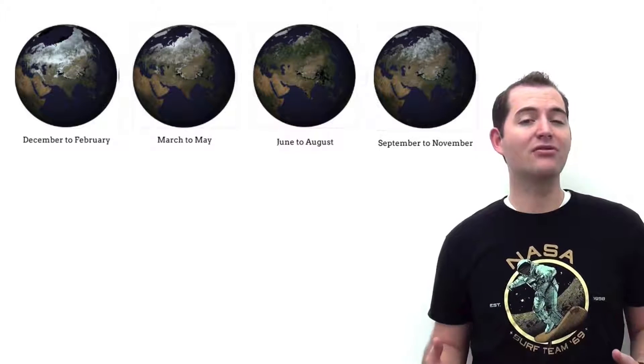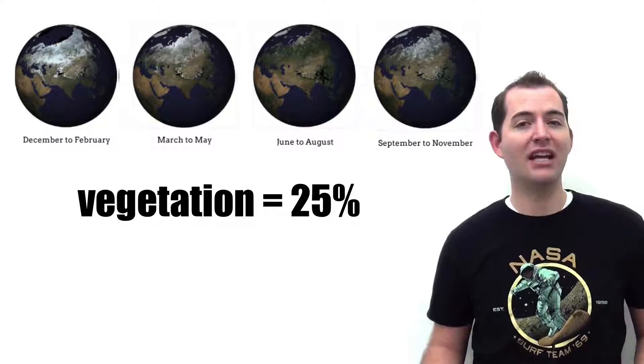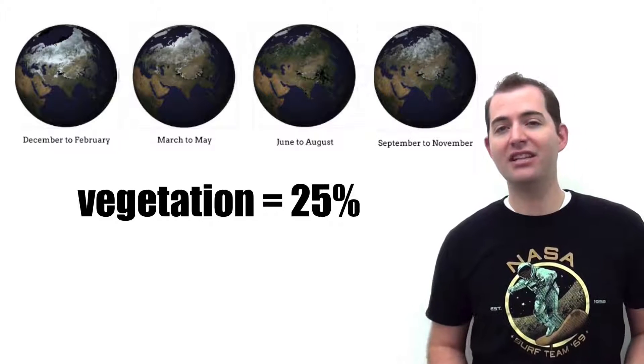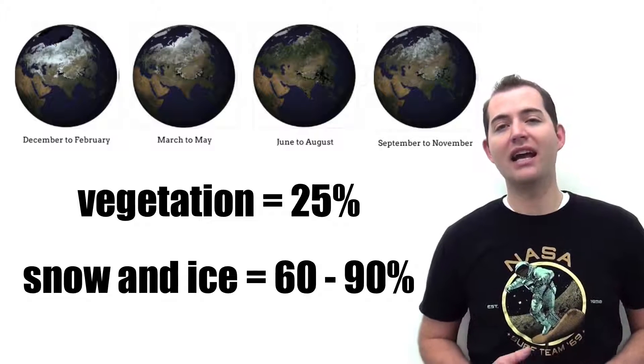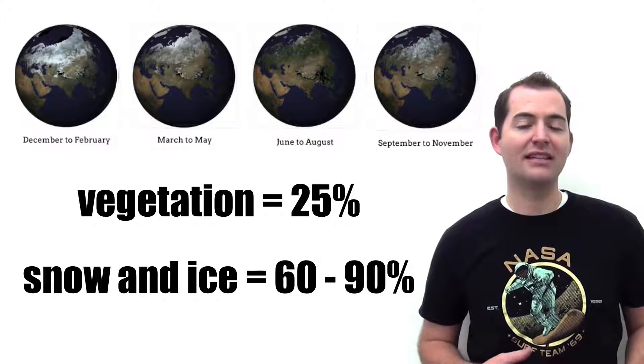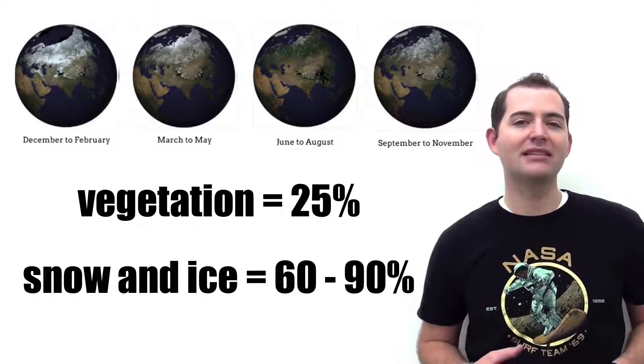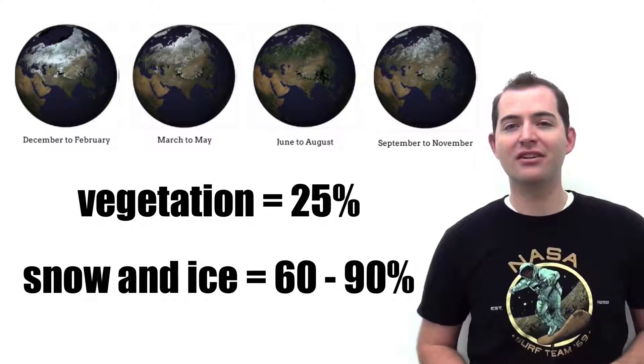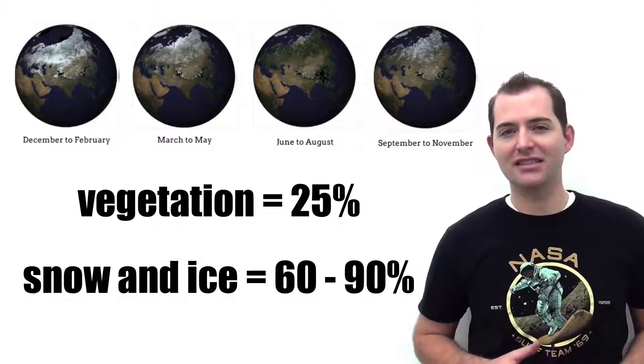For example, the ground might be green during the summer because it's covered with crops and vegetation and these types of vegetation would have a certain albedo, but in the winter a region would likely have a much higher albedo because the ground is covered in ice and snow. This will change how much light is reflected back into space from a particular region on the earth because the albedo is changing at different seasons of the year.